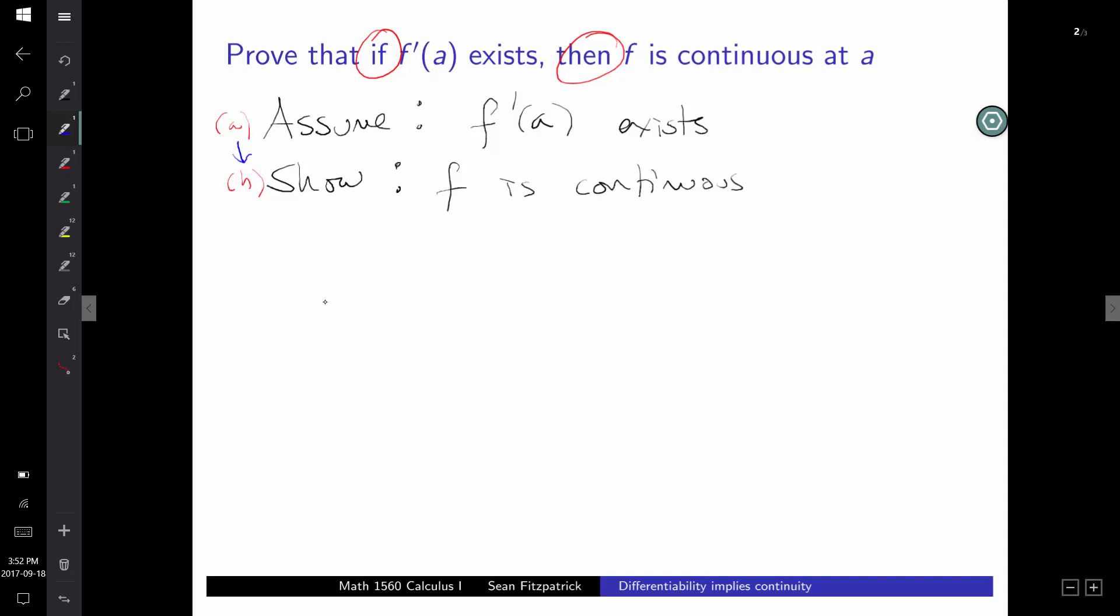So what do we know about this saying that this derivative exists? Well, we know what that means. We know that that means that we can compute this limit. Although we'll see that for the purposes of this problem, it's easier to use the alternative formulation of the derivative. So the limit as X goes to A, F of X minus F of A over X minus A. So we get to assume that that limit exists.